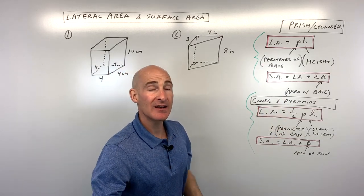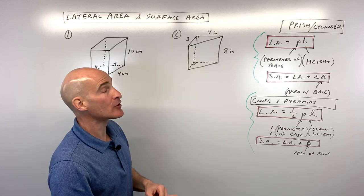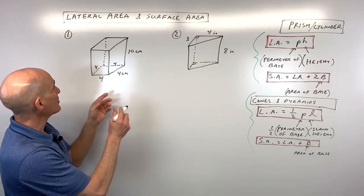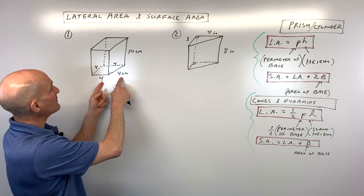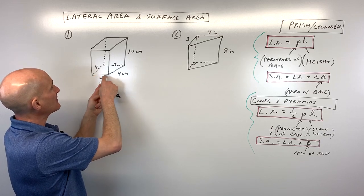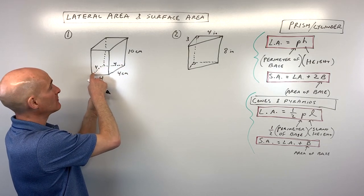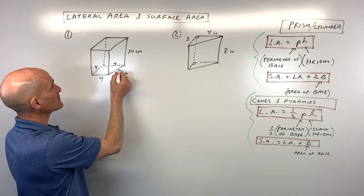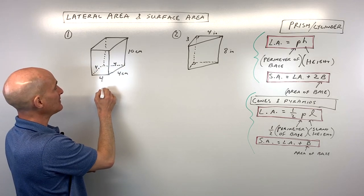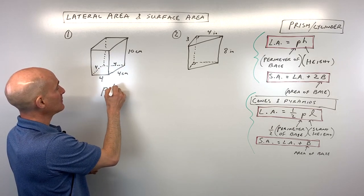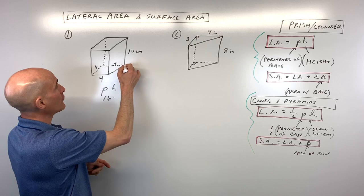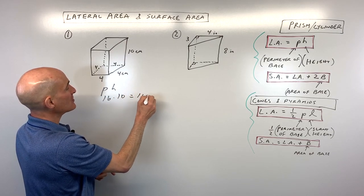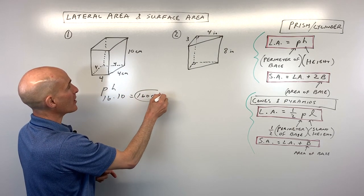Let's do example number one. To find the lateral area, I take the perimeter of the base, which is four plus four plus four plus four — that's 16 — and then multiply it by the height of 10. That gives us a lateral area of 160 centimeters squared.